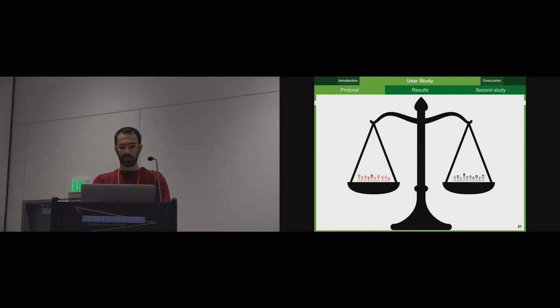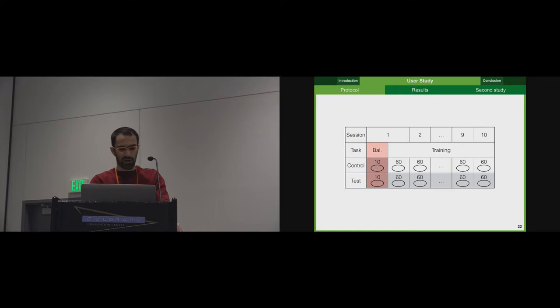And one important point of this between-subject design is to balance the groups, to avoid any bias in the results that might be due to an initial disparity. So to solve this, at the very beginning of the experiment, each participant has to perform what we call the balancing task, with 10 trials of tracking that enables to assess each participant's individual performance, and to assign her in one of the two groups.